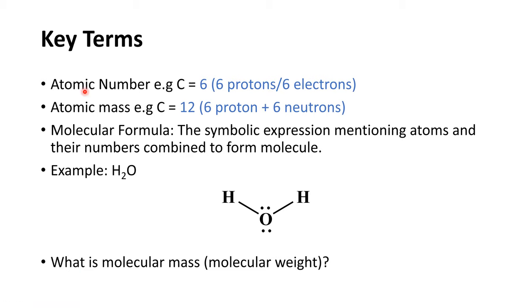Just refreshing these terminologies: the atomic number is basically the number of protons or the number of electrons. The atom as a whole is neutral, unless it is in its ionic form. So however many protons there are, there are an equal number of electrons to stabilize the charge on the atom and make it a neutral, electrically zero entity.